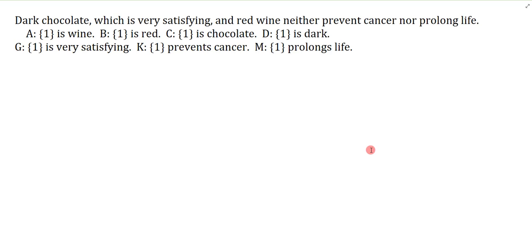The thing to recognize here immediately from what we learned in sentential logic is that we have this comma, and this 'which' closes right there at the comma. These 'comma which' statements should be ripped out and symbolized separately from the rest of the sentence. I typically like to do it first. So I'll do it first — this clause just says 'which is very satisfying.' I need to ask: what is the subject implied in this non-restrictive clause? Well, clearly it's dark chocolate.